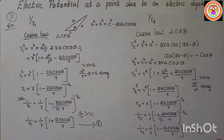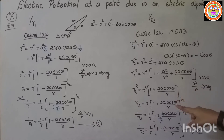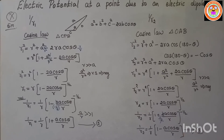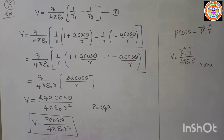Taking equations for 1/r1 and 1/r2 and substituting into equation 1: V = q/(4πε₀) × (1/r1 − 1/r2). The steps applied were: cosine law, take common term r², neglect a²/r², take square root, take reciprocal, apply binomial theorem.